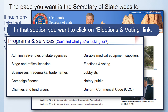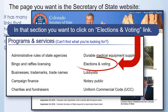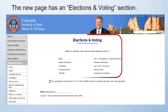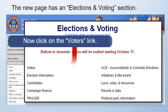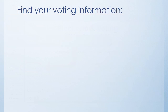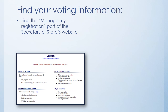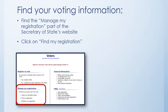Look for the section that says Programs and Services. In that section, click on the Elections and Voting link. The new page has an Elections and Voting section. Now click on the Voters link. Find your voting information — find the Manage My Registration part of the Secretary of State's website. Click on Find My Registration.